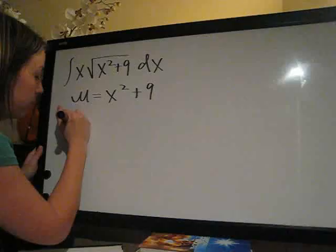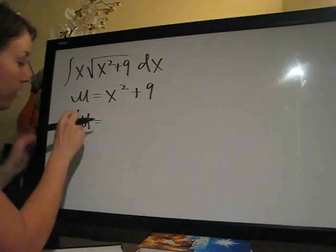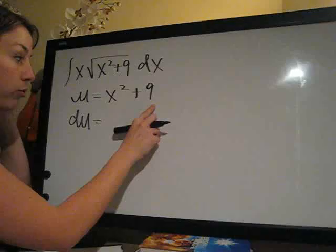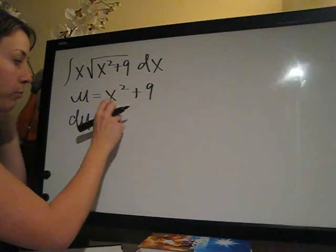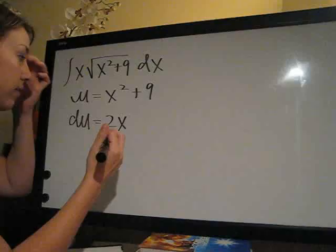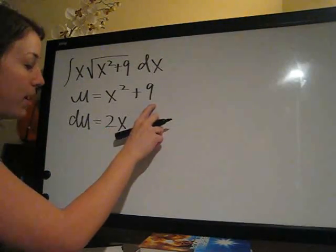So the first thing we want to do is take du, the derivative of u, so the derivative of x squared plus 9. Remember, x squared will become 2x, and 9 will go away because it's a constant.